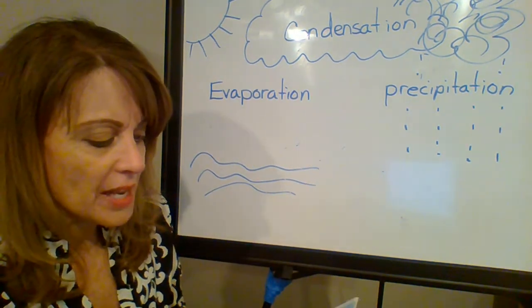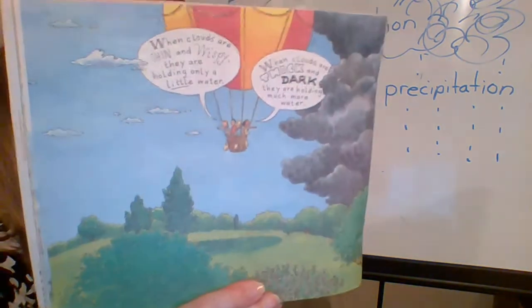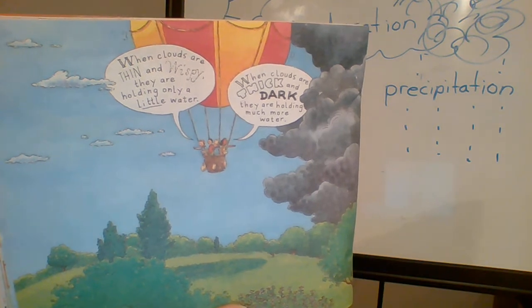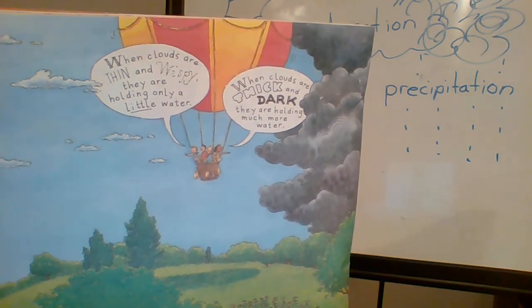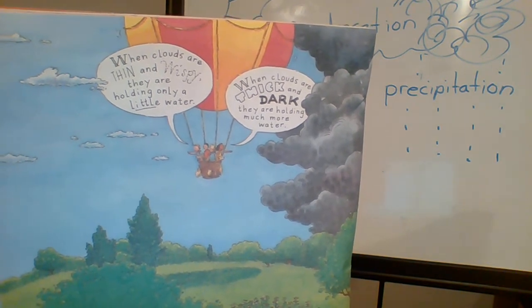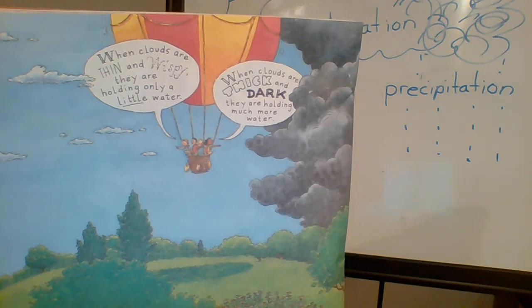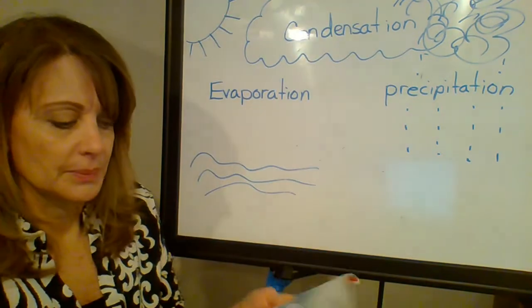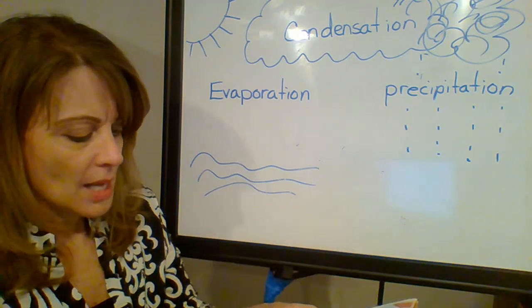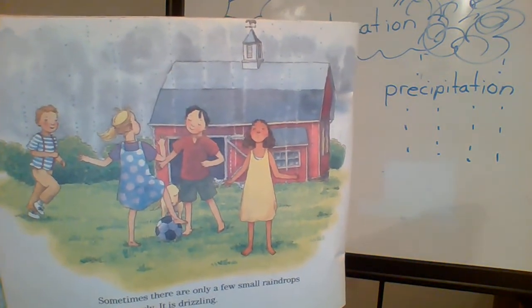When clouds are thin and wispy, they are holding only a little water. But when clouds are thick and dark, they are holding much more water. A single droplet is so small you cannot see it, but you can see a cloud because there are millions and millions of water droplets in a cloud. Inside the clouds, droplets join together to make drops. When clouds can no longer hold them, the drops fall to the earth — they fall through the air and splatter on the ground. They are raindrops. Sometimes there are only a few small raindrops that fall slowly — it is drizzling. Sometimes there are lots of big drops that fall very fast — now it is pouring.